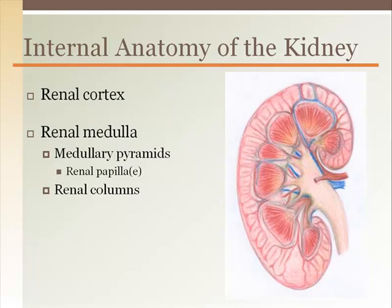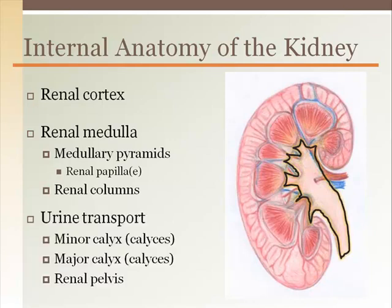At the base of each pyramid, called the renal papilla, urine drips into a collecting region called the minor calyx. The minor calyces converge into major calyces, which drain the urine into the funnel-shaped renal pelvis before sending it out of the kidney and to the ureter.